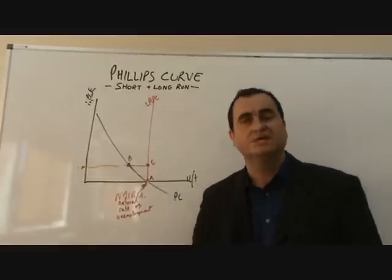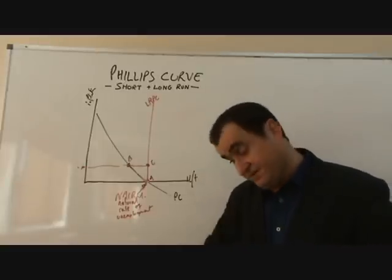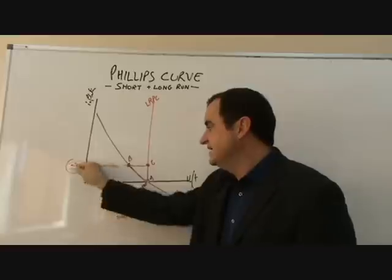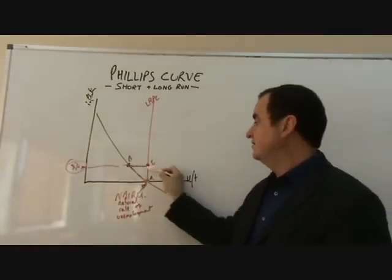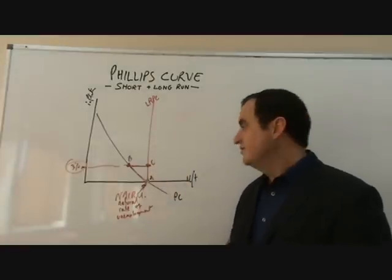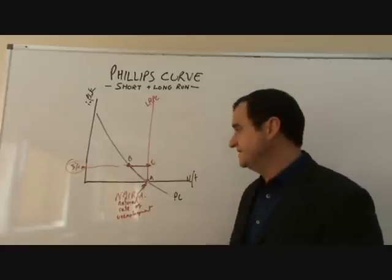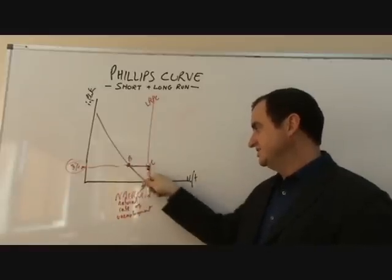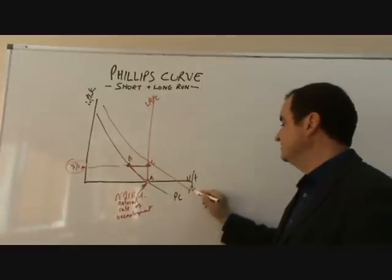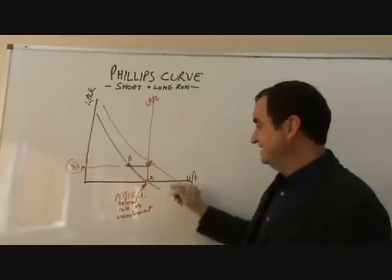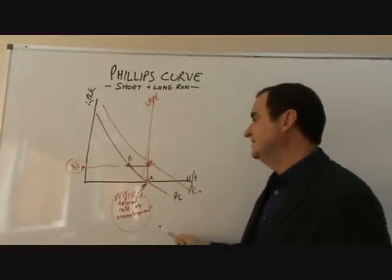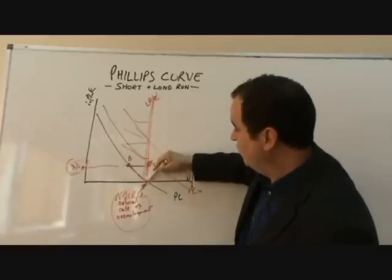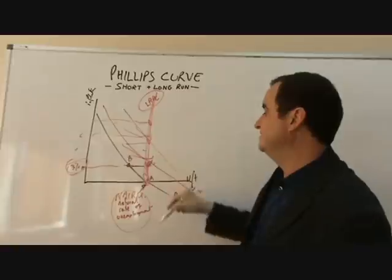If workers anticipate inflation - say 3% - and that 3% becomes embedded into the economy, then the economy returns to point C. Workers bid up their wages in real terms, 3% inflation becomes standard, everyone expects it, and the real wage rise reduces the number of workers demanded, pushing unemployment back up. We're then on a new short-run Phillips curve, PC2, still at the natural rate of unemployment but now at 3% steady inflation. And this process can happen again and again, so we always return to the long-run Phillips curve at the natural rate.